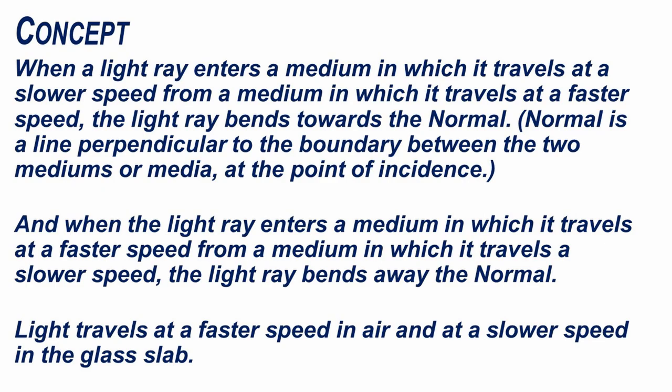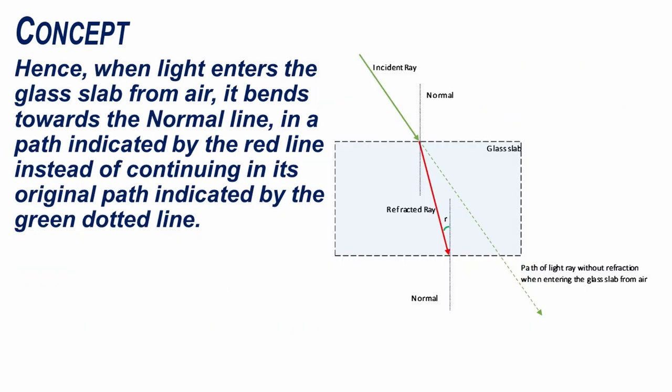Light travels at a faster speed in air and at a slower speed in the glass slab. Hence, when light enters the glass slab from air, it bends towards the normal line in a path indicated by the red line instead of continuing in its original path indicated by the green dotted line.